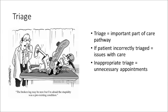It's noteworthy that the triage process is an important part of the care pathway because if the patient is incorrectly triaged, issues can arise in their care. For example, if a patient requires urgent care but was given an appointment in six months' time, their condition could have progressed and they may have missed out on necessary early treatment. Inappropriate triage can also lead to unnecessary appointments if the patient is given an appointment when they didn't really need one — so it can work both ways.